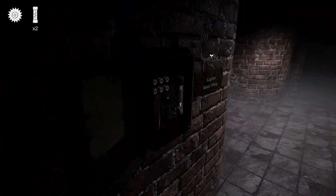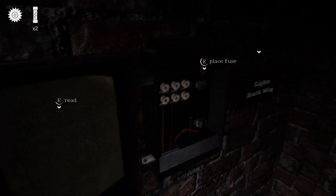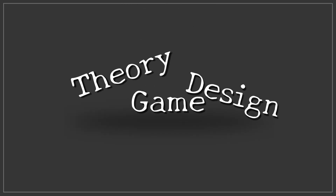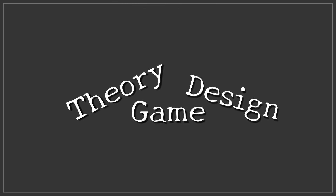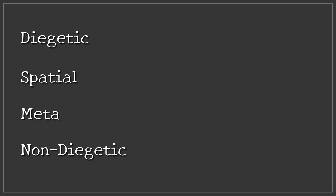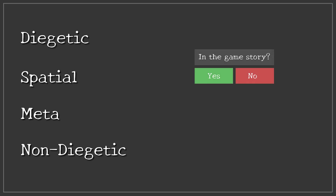So after staring at this system for years, I finally decided it had to go. The first question was how my new inventory system should look. Let's take a short dive into game design theory. There are four ways a user interface can be implemented: non-diegetic, meta, spatial, and diegetic. They differ depending on whether they are included in the game's fiction and whether they exist in the game's spatial environment.